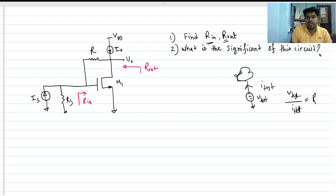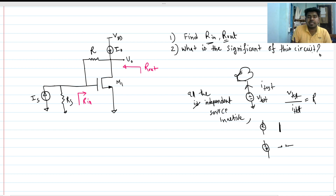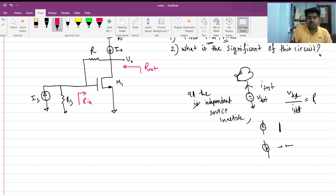We also make all independent sources inactive. If we have an independent voltage source, it is short-circuited, and if we have an independent current source, it is open-circuited. You can use this method with KCL and KVL to find R_in and R_out.